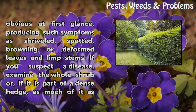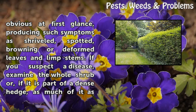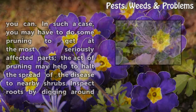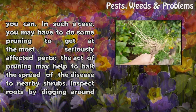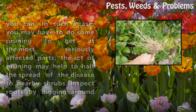Many shrub diseases are obvious at first glance, producing such symptoms as shriveled, spotted, browning or deformed leaves and limp stems. If you suspect a disease, examine the whole shrub or, if it is part of a dense hedge, as much of it as you can. In such a case, you may have to do some pruning to get at the most seriously affected parts. The act of pruning may help to halt the spread of the disease to nearby shrubs.